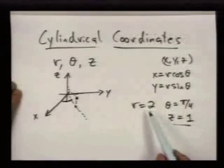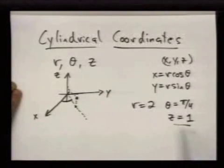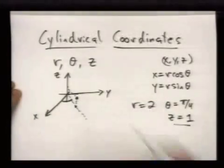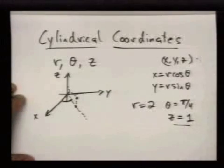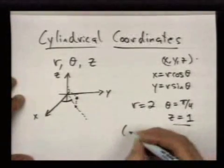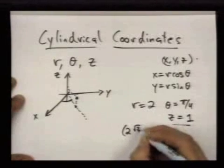So saying r = 2, θ = π/4, and z = 1 describes this point, which in the usual (x, y, z) coordinates, this would just be 2√2/2, 2√2/2, 1.